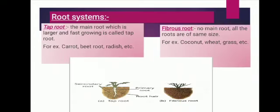The main root which is larger and fast-growing is called a tap root — one main root is present from which several secondary roots arise, like in carrot, radish and mango. In fibrous roots, no main root is present and all the roots are of the same size, like in coconut, wheat and grass. The difference is that tap root has a main root with several small roots, while in fibrous roots, no main root is present and all roots arise as a bunch of the same size.